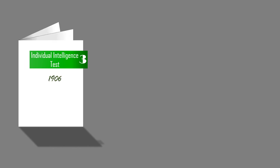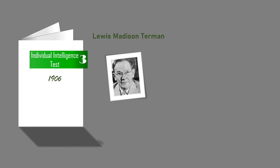Number 3 is Thurman's Stanford-Binet Individual Intelligence Test, 1906. Lewis Madison Thurman, an American cognitive psychologist from 1877 to 1956, published a revised and perfected Binet-Simon scale for American populations in 1906 while he was at Stanford University. In 1916, he adopted William Stern's suggestion that the ratio between mental and chronological age be taken as a unitary measure of intelligence, multiplied by 100 to get rid of the decimals.